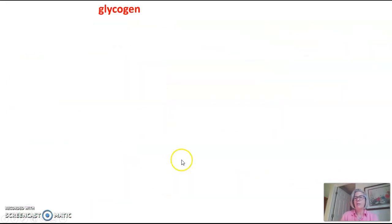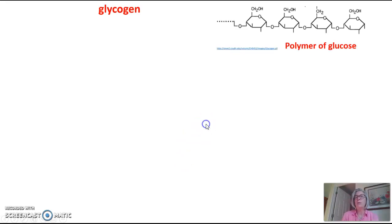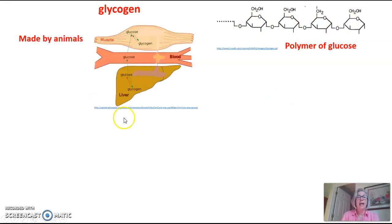The next polysaccharide we'll talk about is glycogen. This is also a polymer of glucose. You can see our glucose, glucose, glucose, glucose here. It is made by animals and it's only made in certain organs. So it's made in the muscle and in the liver.